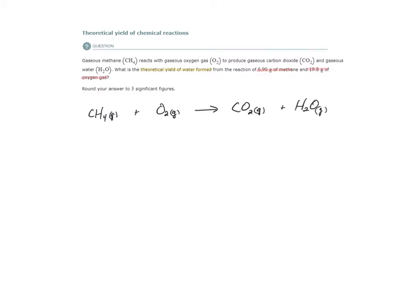Now that we have the chemical equation, we have to balance it. If I place a 2 here and a 2 here, it looks to be balanced. 1 carbon, 1 carbon, 4 hydrogens, 4 hydrogens, 4 oxygens, 2 here and 2 here to make 4. That was an easy one to balance.